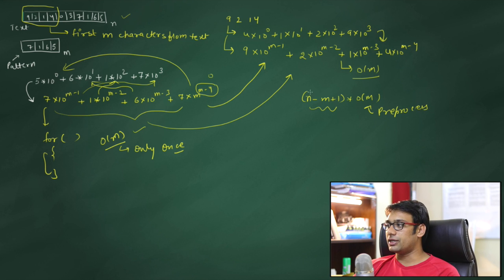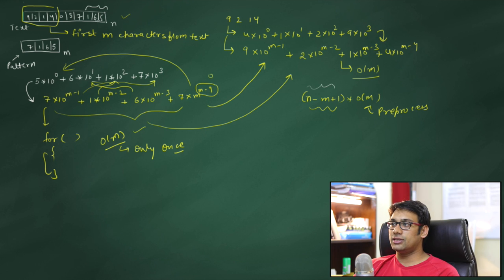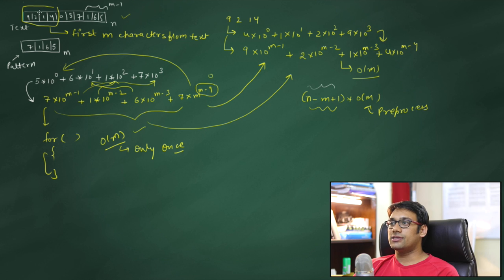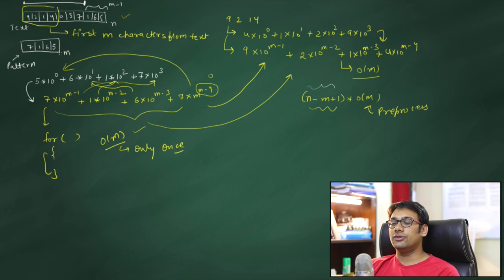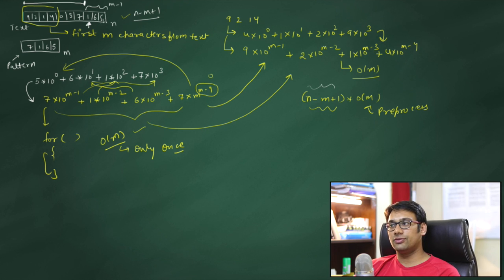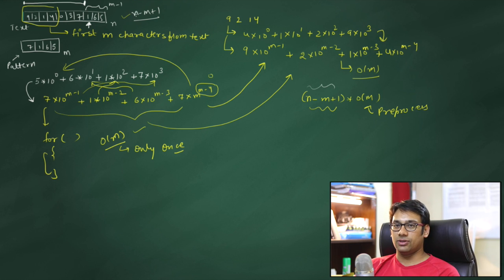To clarify where n−m+1 comes from: in the worst case we don't compare the last m−1 digits of the text as a starting position. If the total text length is n and the pattern length is m, we can only start a comparison up to position n−m+1, because after that point the remaining text is shorter than the pattern and cannot contain it.